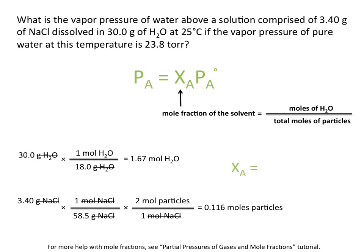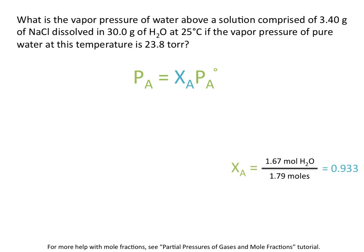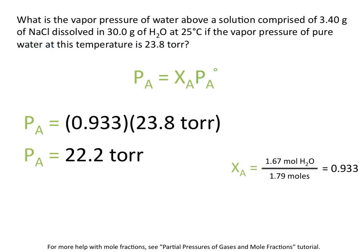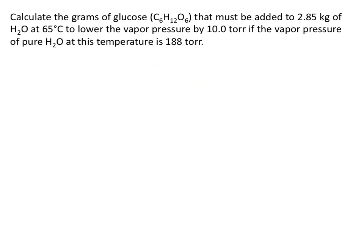To calculate the mole fraction of the solvent, we take the moles of H₂O — 1.67 moles — divided by the total number of moles of all particles. We add up the moles of H₂O and the moles of solute particles dissolved to get 1.79 moles total. So the mole fraction of water in this solution is 0.933. We then multiply this by the vapor pressure of the pure solution, 23.8 torr, and this gives us the new vapor pressure of the solution: 22.2 torr.